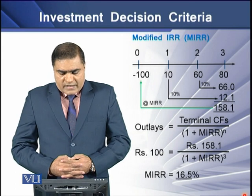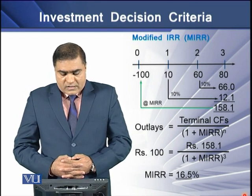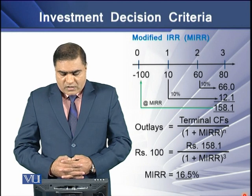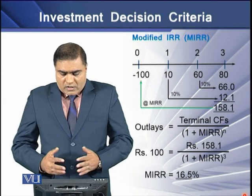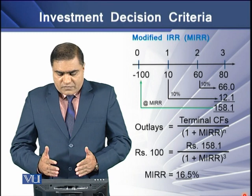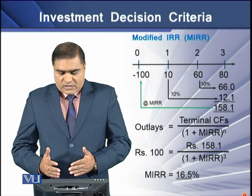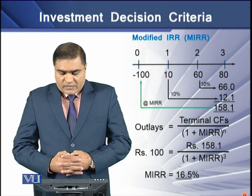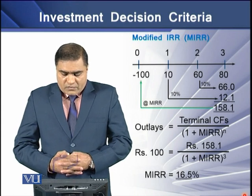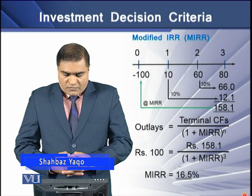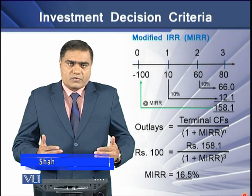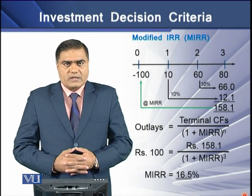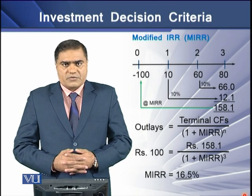For example, with an initial outflow of $100 and future cash inflows of $10, $60, and $80, we compound the future cash flows forward at 10% WACC to obtain a terminal value of $158.10. We have a cash outflow of $100. When we equalize these two values using a certain discount rate, that discount rate is termed the Modified IRR.